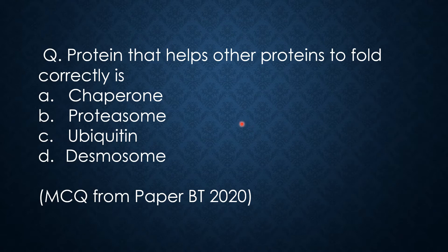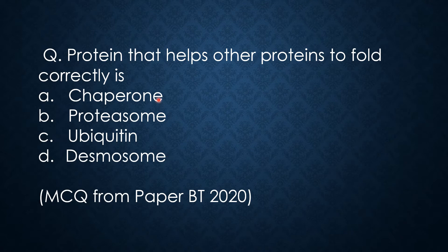Let's start with my question. The question is from the biotechnology paper of 2020. The question is asking: the protein that helps other proteins to fold correctly is — chaperone, proteasome, ubiquitin, or desmosome. These are the four options given, and this is an MCQ type question, so one of the four options would be the correct answer.